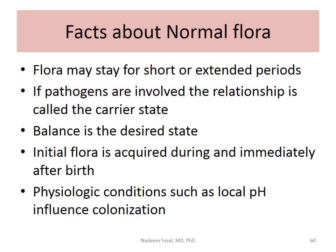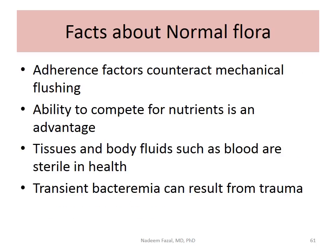Innate immune factors and physiological conditions — like pH of the skin, vagina, stomach, and mouth — determine what bacteria find a safe home at those places. These bacteria must adhere to particular openings in the human body, counteracting mechanical flushing. For example, bacteria in the urethra must stick there and not be flushed out by urine. They also need to compete for nutrients.